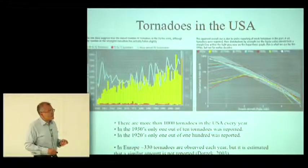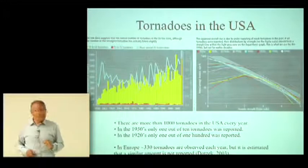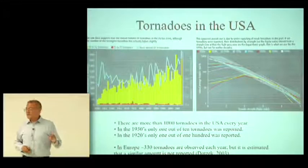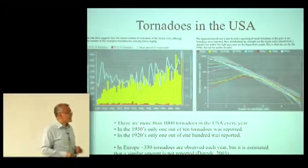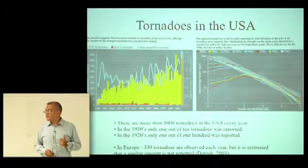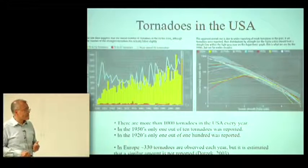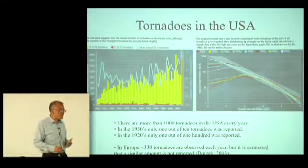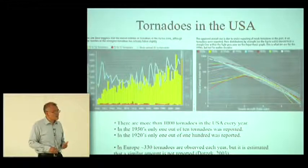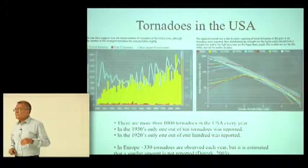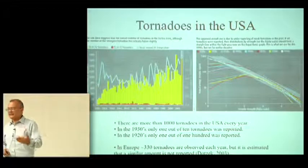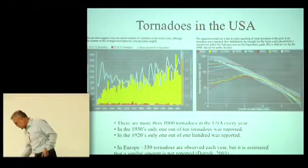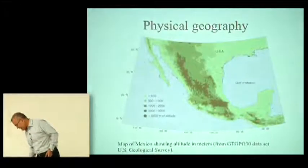In summary: there are about 1,000 tornadoes in the United States every year, with an outlier in 2004 of more than 1,800. In the 1950s only one out of ten tornadoes was reported; in the 1920s only one out of a hundred was reported. In Europe there are fewer tornadoes — around 300 every year are reported, but it is believed the same amount goes unreported. That is something to keep in mind when we look at the data from Mexico.